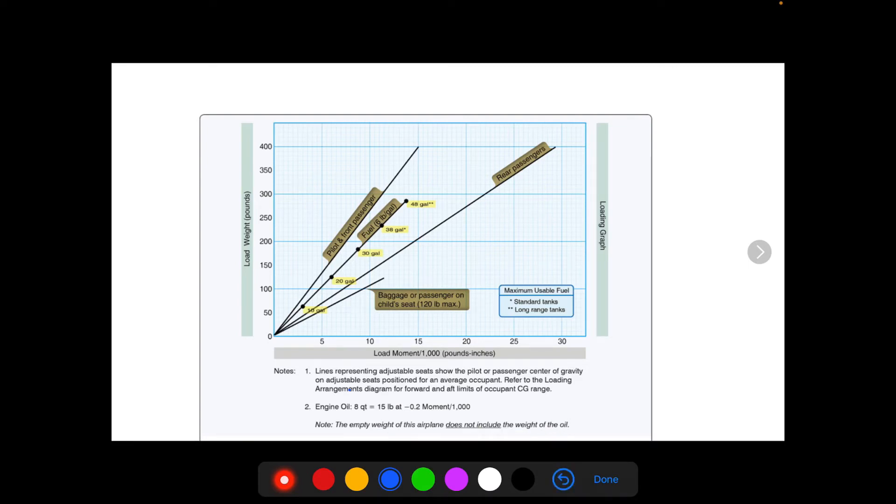So if you're given a problem where the empty weight is, let's say, 1350, the oil is not included. So when you're adding up all the weights, you're going to want to add in 15 pounds for the oil.